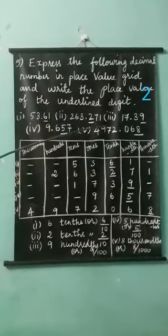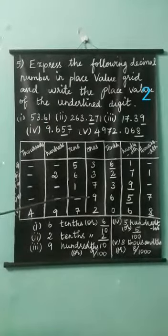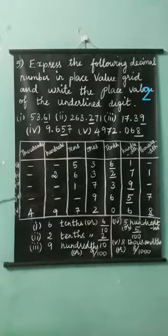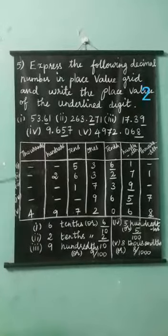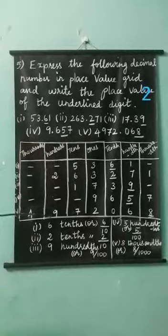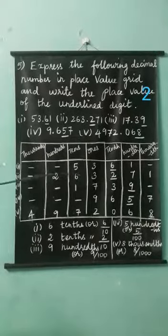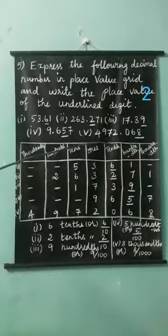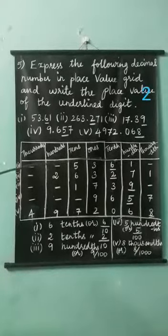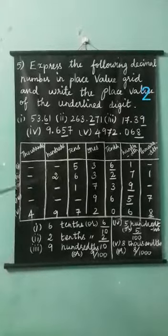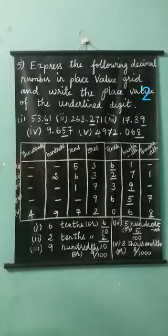Last one: four thousand nine hundred and seventy-two point zero six eight. Write two in one's place, seven in tens place, nine in hundreds place, and four in thousands place. See the decimal numbers: zero in tenth place, six in hundredth place, eight in thousandth place.